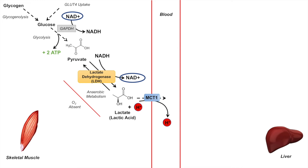Once hydrogen ions are exported from the skeletal muscle cell via MCT1, the blood — which maintains a pH range of about 7.35 to 7.45 — will buffer those hydrogen ions. If so many hydrogen ions are produced that blood pH begins to drop, a reaction involving bicarbonate and the hydrogen ions leads to carbonic acid production and eventually CO₂ in the blood, which can then be exhaled. With hydrogen ions managed and lactate removed, what happens to the lactate now circulating in the blood?